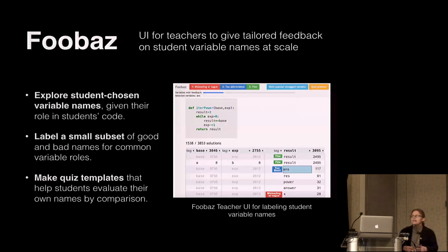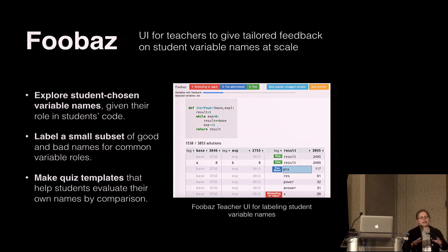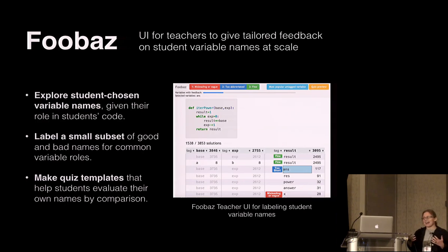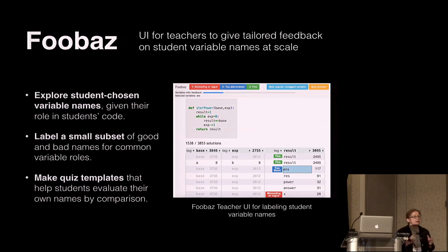We present FUBAS. It allows a teacher — here is a snapshot of the teacher view — to explore student-chosen variable names in the context of the code they occurred in. Teachers can label a small subset of good and bad examples, essentially creating a Hall of Fame and Hall of Shame. These become quiz templates deliverable to current and future students.